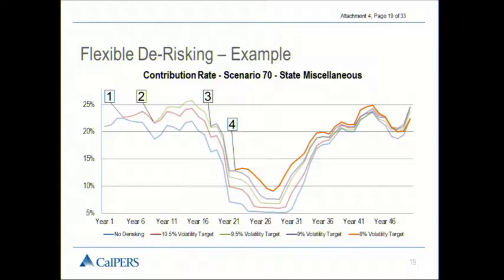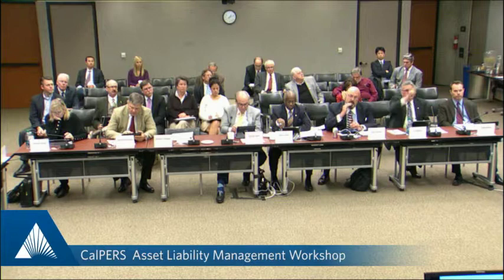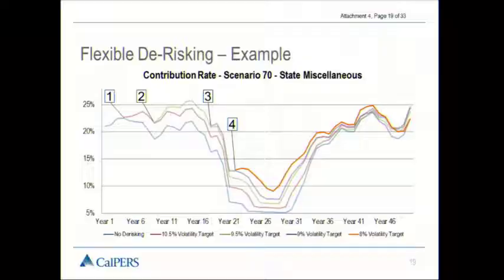This scenario is essentially a pretty good scenario in early years, so you are somewhat hurt by having these de-risking events because you de-risked before some good periods. But you are saving a fair amount in the later portion of this particular scenario because that's a period where you get some poor investment returns, and having less risk is a good thing then. [Question on axis]: The y-axis — the left one — is the employer contribution rate, going from a minimum of about 5% up to 25% at the top of the graph.